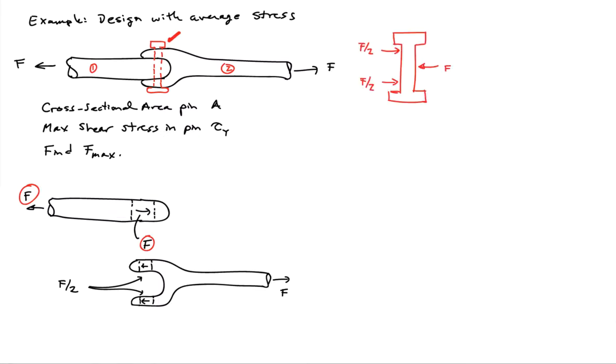Now, if I draw a picture of the pin, which is what I'm actually interested in, by Newton's third law, I'm going to have this force F here, and I'll have the two forces F over two acting from piece two.